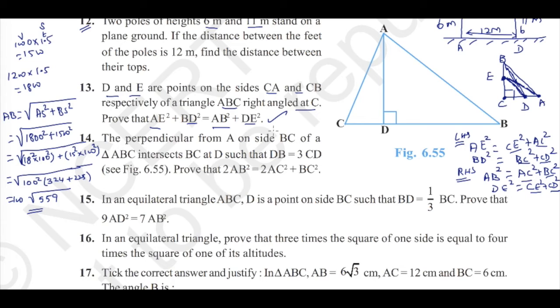Now question number 14. The perpendicular from A on side BC of a triangle ABC intersects BC at D such that DB equal to 3CD. We need to prove 2 times of AB square equal to 2 times of AC square plus BC square.